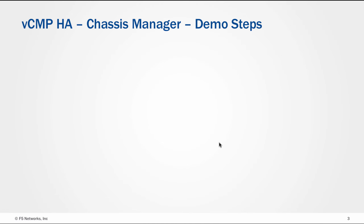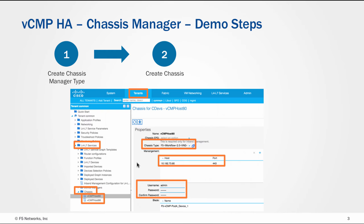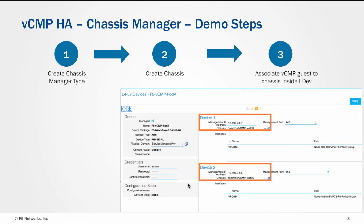Let's look at the VCMP-HA ACI Chassis Manager demo steps. First, create a L4-L7 Chassis Type under APIC L4-L7 Services Inventory. Second, under APIC Tenant Space, L4-L7 Services, under Chassis, create a new chassis for each VCMP host and associate it with the previously created chassis type. Finally, when creating L4-L7 devices, after entering the VCMP-GAS Management IP, associate this GAS with the chassis, which in essence is the VCMP host.